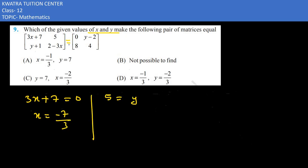5 will be equal, so it will become 7 as well. The third element will be equal, so y will become 8 minus 1, which is 7.